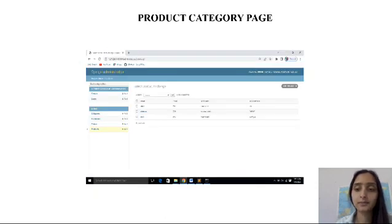This is the product category page where it makes shopping easier for the customer. You can directly select the category like male, female, or children, whatever you want to shop.